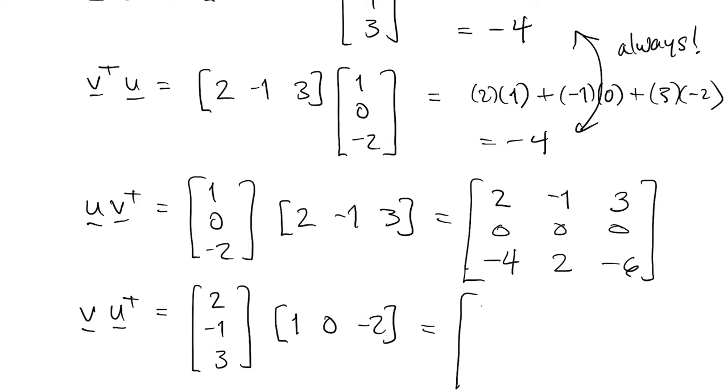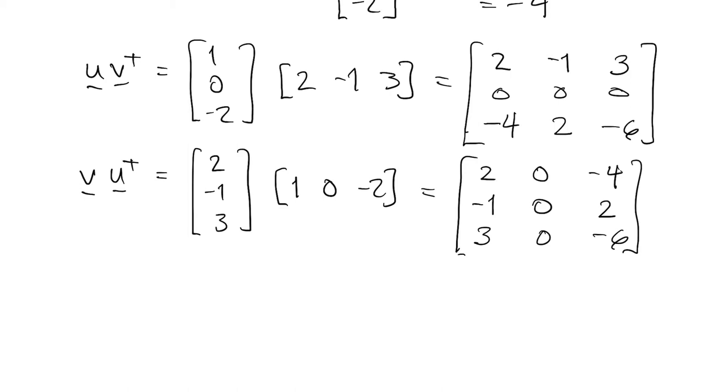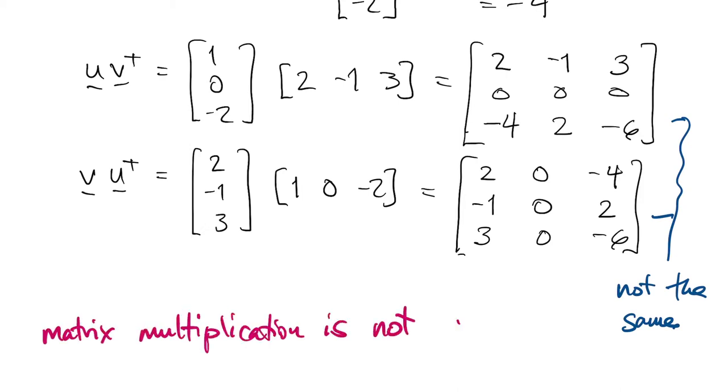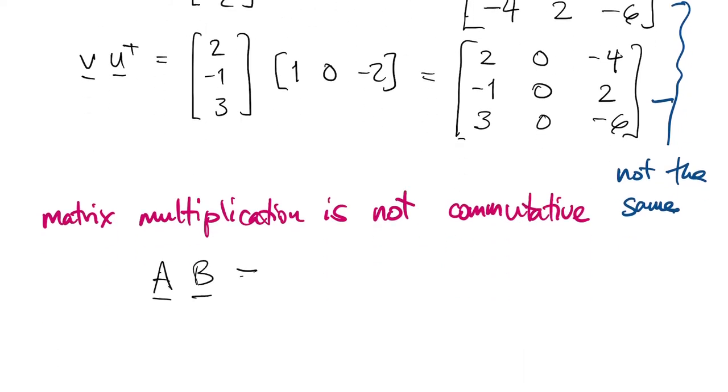Now we could also do the outer product v u transpose. So again, switch the order of the vectors. We get 2 times 1, 0, negative 2. Then we get negative 1 times that vector. And then we get 3 times that row vector. You can see now that these two outer products are not the same thing. This is our first encounter of a general statement that matrix multiplication is not commutative. So A times B is not equal to B times A, in general, even if both sides are defined.